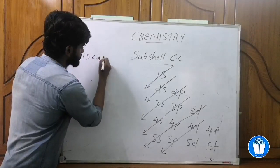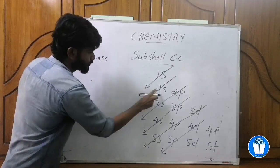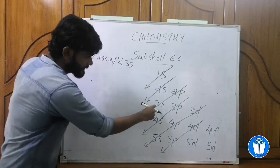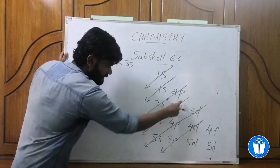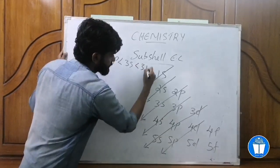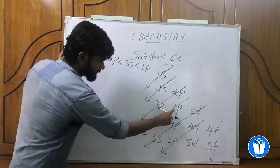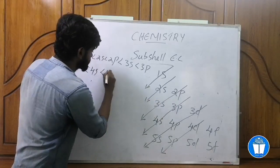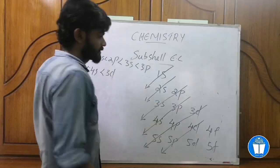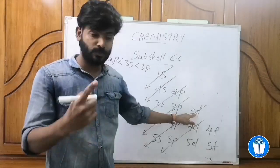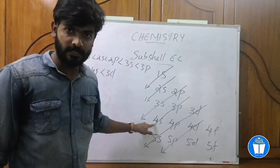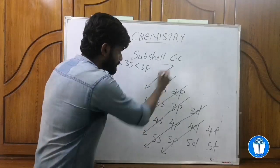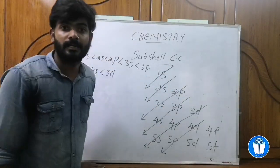2s, two s, two p, two p, three s. Now 3s, 3s, 3s, 3p, 3p, 3d. 4s, 4s, 4s. 3d, 3d, 3d. 4s, 4s. 5s, 5s.